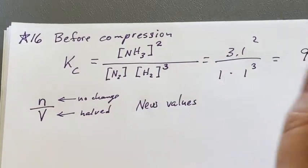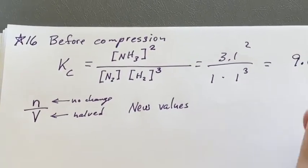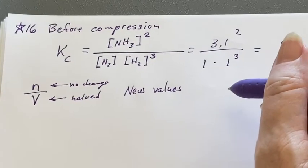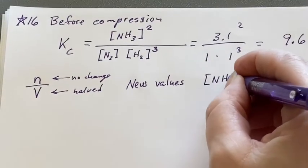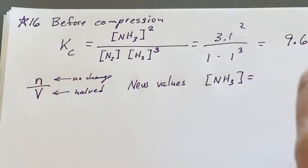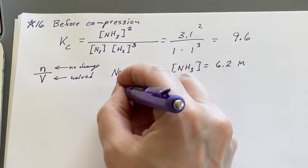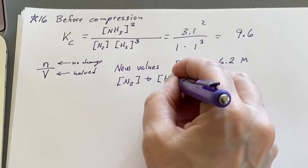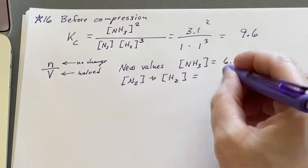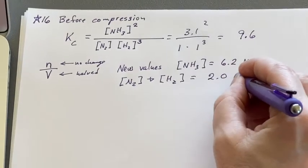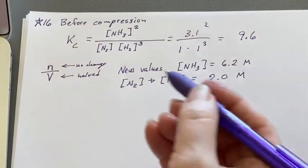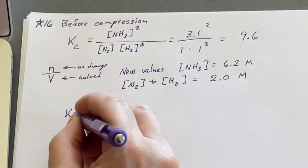Let's write those down. The new values before equilibrium is reached, that's why we're going to be writing Qc: NH3 concentration, instead of being 3.1, it's going to double to 6.2 molar. And for nitrogen and hydrogen, those concentrations are also both going to double to 2.0 molar.